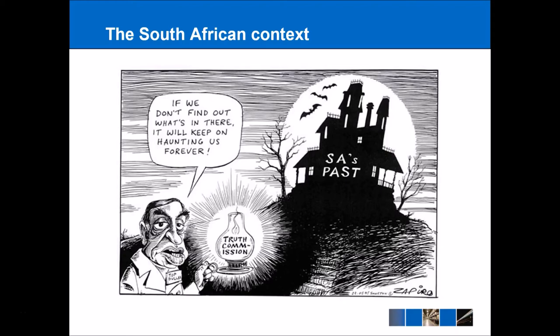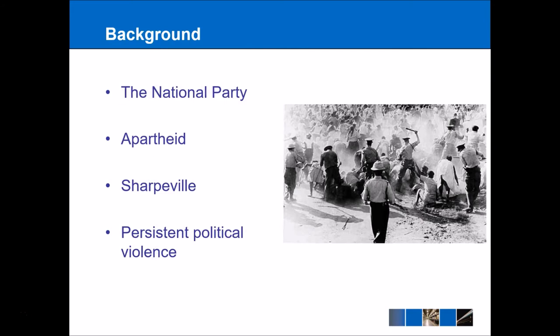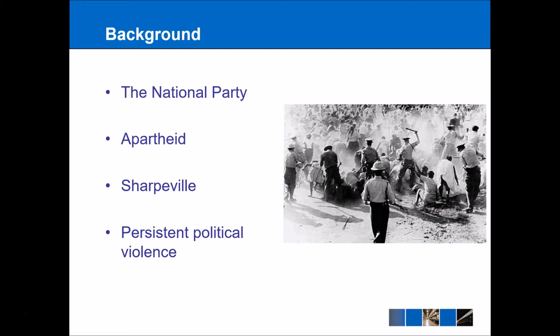Now we've looked at truth commissions in general, let's consider a particular example. In South Africa, the National Party came to power in 1948 and immediately began a policy of apartheid. Apartheid literally translates as separateness and meant that blacks and whites in the country had different facilities — black-only beaches, white-only beaches, black-only post offices, white-only post offices. But the policy of apartheid actually went much further than this and meant that black people had fewer legal rights in South Africa and they also were not allowed to vote. South Africa's Truth and Reconciliation Commission will be examined further.